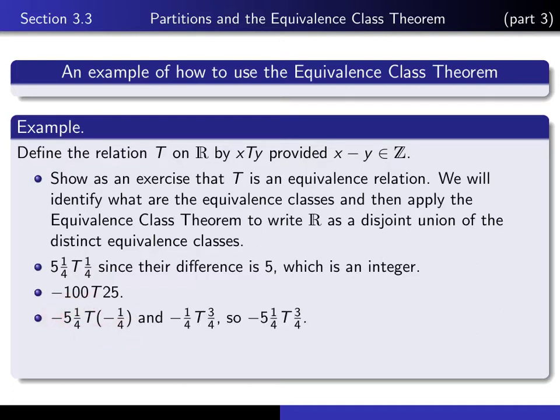Here's another one. Minus 5 and a quarter is related to minus a quarter, because the difference is 5, and that's an integer. Minus a quarter is related to 3 quarters, because the difference is 1, which is an integer. So it follows by transitivity that minus 5 and a quarter is related to 3 quarters. But what I wanted to point out is that this 3 quarters lies between 0 and 1.